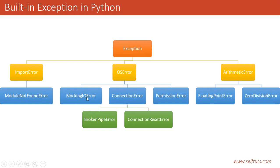ModuleNotFoundError inherits from ImportError, and ImportError inherits from Exception. For OSError, there are sub-classes such as BlockingIOError, ConnectionError, and PermissionError — for example, when you try to write to a folder without permission. ConnectionError itself has child classes like BrokenPipeError and ConnectionResetError. These inherit from Exception indirectly. The key point is every exception class — built-in or user-defined — must inherit from Exception directly or indirectly.